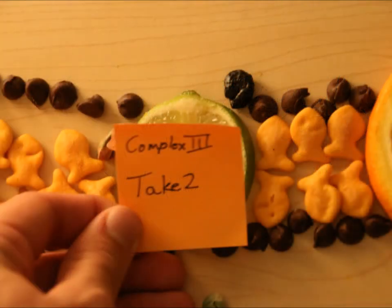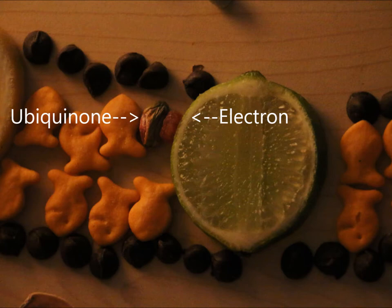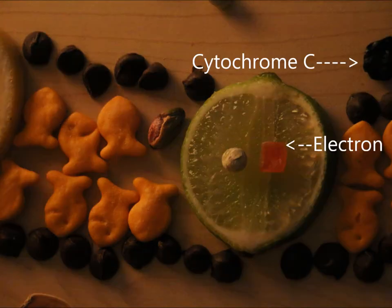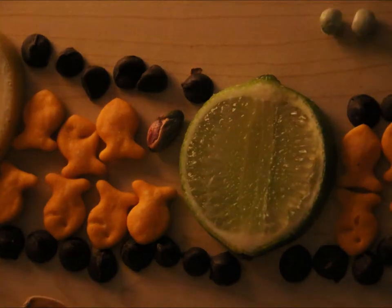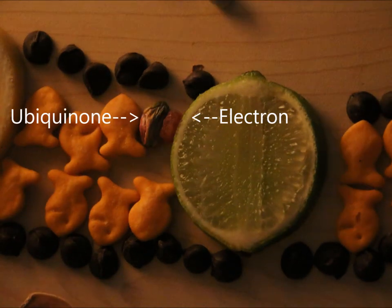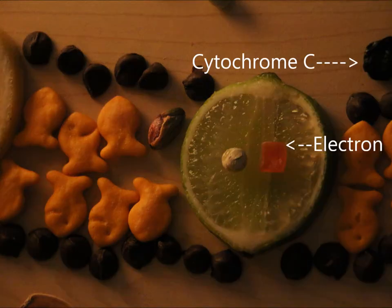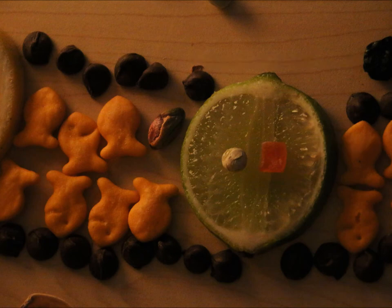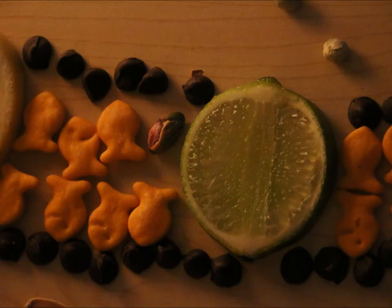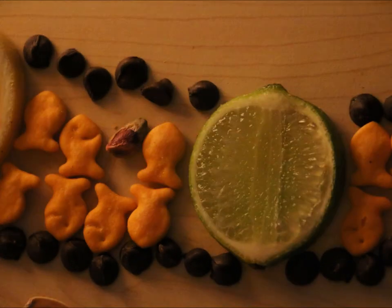Next up is complex 3. Complex 3 is reduced by ubiquinone, a carrier of an electron. The electron then moves into complex 3, again pushing hydrogen plus protons into the inner membrane space. The endpoint of the electrons in complex 3 is cytochrome c, which is reduced by complex 3 and then oscillates between complex 3 and complex 4.